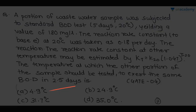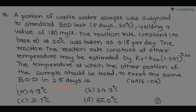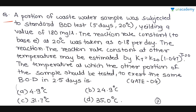The next question: a portion of a wastewater sample was subjected to a standard BOD test — 5 days at 20°C — yielding a value of 180 mg per liter. The reaction rate constant (base e) at 20°C was 0.18 per day. The reaction rate constant at other temperatures may be estimated by: K_T = K₂₀ × (1.047)^(T − 20), where T is temperature. The temperature at which another portion of the sample should be tested to exert the same BOD in 2.5 days is — (GATE 2004) — A: 4.9°C, B: 24.9°C, C: 31.7°C, D: 35°C.